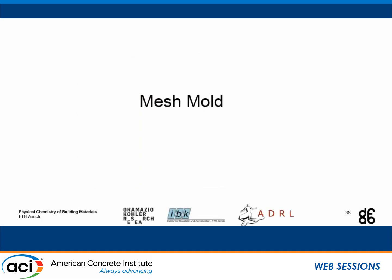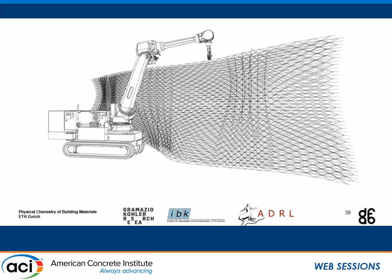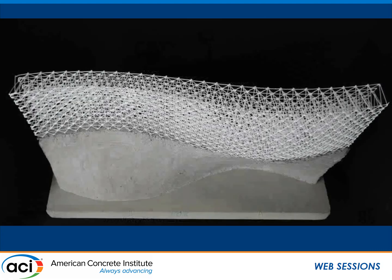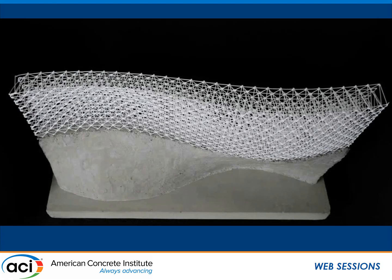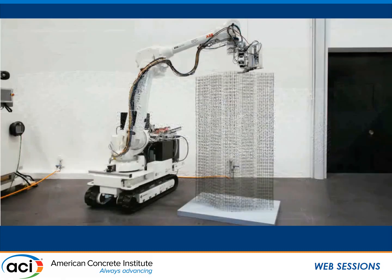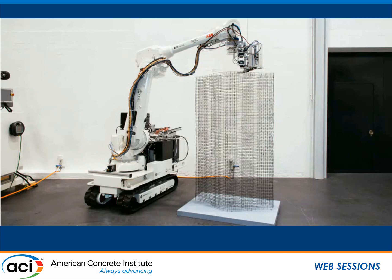The last process I'll talk about is the mesh mold. The idea behind it started as a lost formwork — a formwork that serves both as formwork and reinforcement. It started with spatial extrusion of plastic, but Norman Hack being an architect, he needed some folks to tell him to use real reinforcement, so he moved on to steel packaging wire. The robotic tool head that bends, cuts, and welds this steel packaging wire worked really quite well.